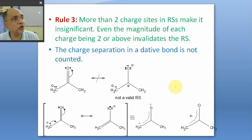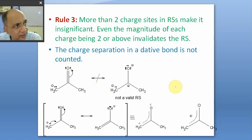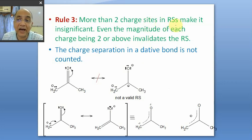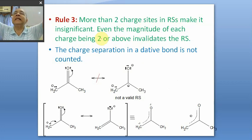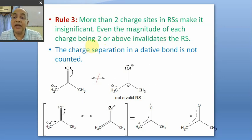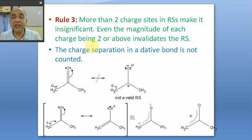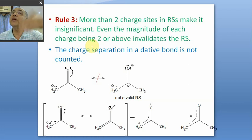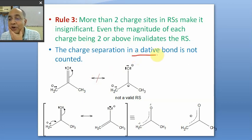Rule number three: more than two charge sites in an RSS makes it insignificant. Three or four charge centers is totally invalid. Also, a magnitude of charge equal to two or more at each charge point is also not acceptable — magnitude should be less than two. An important note: the charge separation in a dative bond is not counted. If you find a dative bond, the formal plus on the donor and minus on the acceptor are not counted as charge centers.